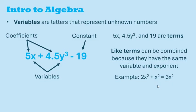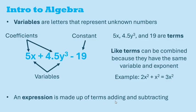For example, 2x squared plus x squared are like terms that can be simplified into 3x squared. But if we had 2x squared and just x without the squared here, they would no longer be like terms. An expression is made up of terms adding and subtracting, such as in the example here.